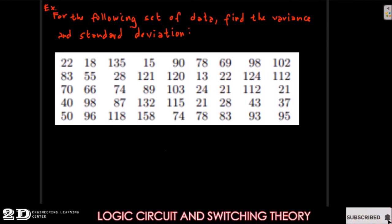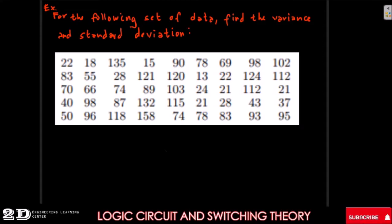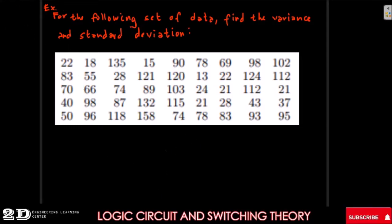Now we will have this example for getting the variance and the standard deviation for grouped data. We have an example: for the following set of data, find the variance and the standard deviation. The number of data is 5 times 9, so our n is equal to 45.